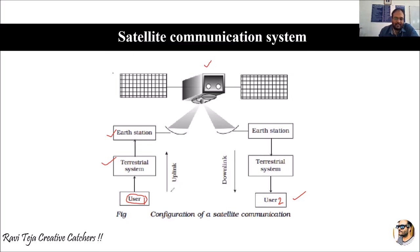The process of sending data from User 1 to the satellite using an earth station is called uplink. From User 1, the data has been transmitted to the satellite. Now, using the same satellite, we need to transmit the signal to User 2, who could be any kind of broadcast system or TV receiver. The data sent by User 1 is now at the satellite.